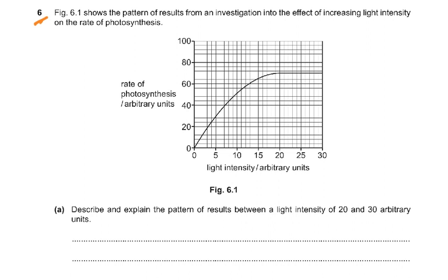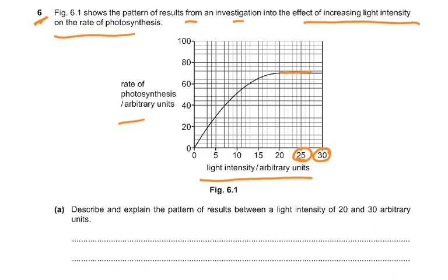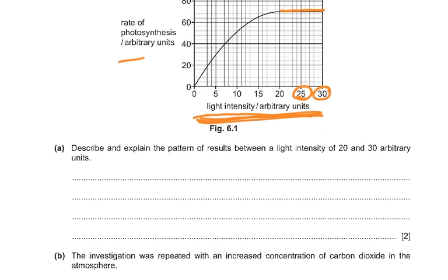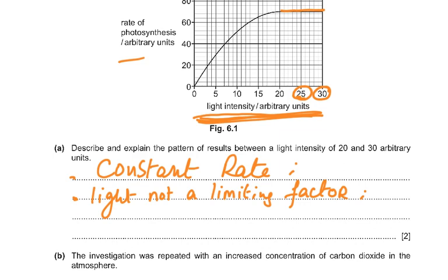Question 6: Figure 6.1 shows the effect of increasing light intensity on the rate of photosynthesis. The rate of photosynthesis is on the y-axis and light intensity in arbitrary units is on the x-axis. Between light intensities of 20 and 30, the rate has become constant — light is no longer the limiting factor. Some other factor such as temperature or carbon dioxide concentration is now limiting.